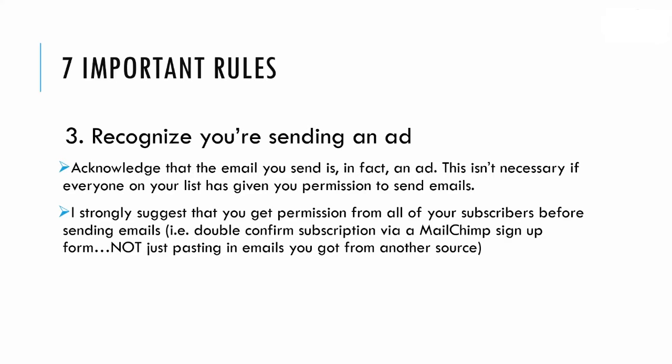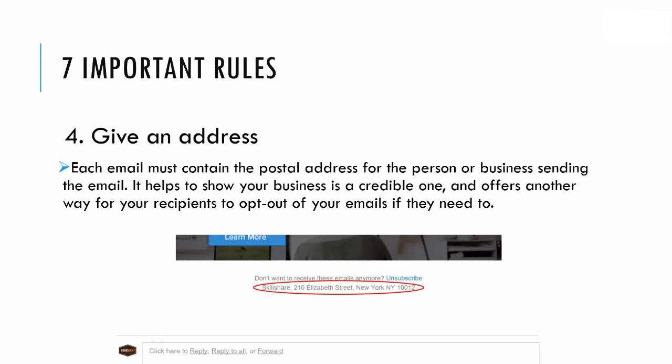The nice thing about the permission requirement is that MailChimp does it by default, so nothing to worry about if you get your subscribers via a MailChimp signup form or page. Number four: give an address. Each email must contain the postal address for the person or business sending the email. It helps show your business is a credible one and offers another way for recipients to opt out.